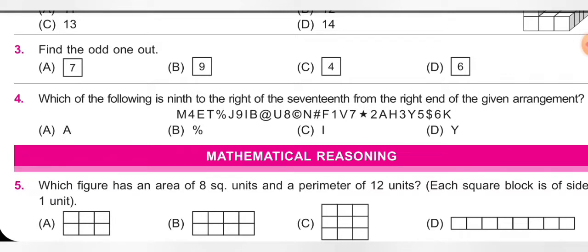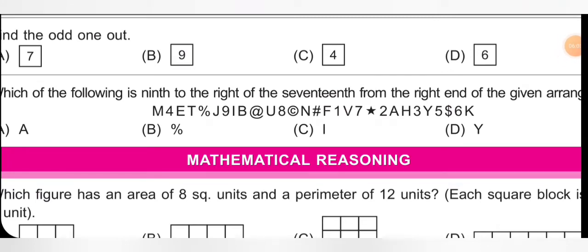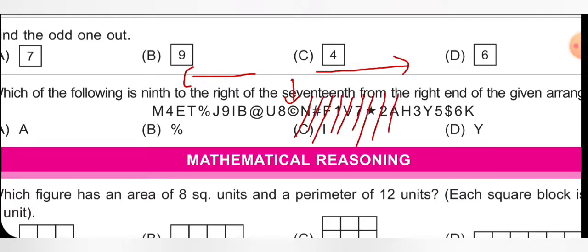Fourth question — last of the logical reasoning part: which is the ninth to the right of the 17th from the right end of the given arrangement? Count from the right: 1, 2, 3 ... 17 — that is the 17th element. Now count 9 positions to the right from that element: 1, 2, 3, 4, 5, 6, 7, 8, 9 — that gives us 'A'. Option A is correct.